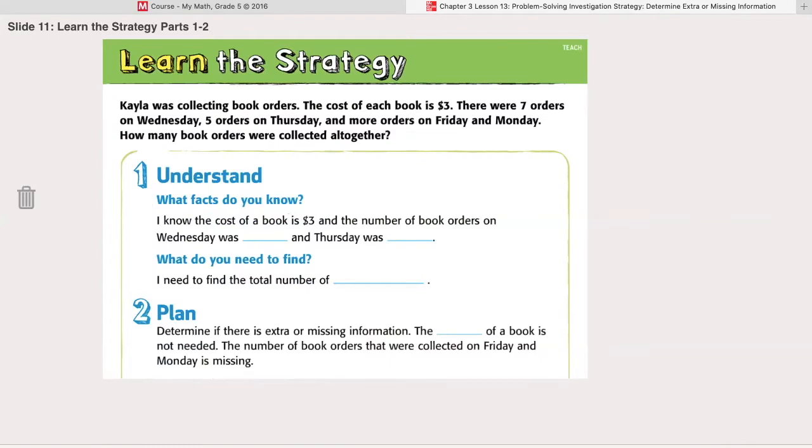Kayla was collecting book orders. The cost of each book is $3. There were seven orders on Wednesday, five orders on Thursday, and more orders on Friday and Monday. How many book orders were collected altogether?